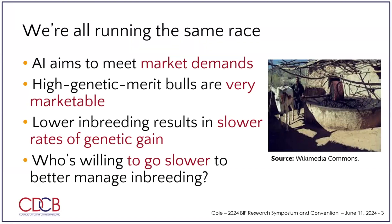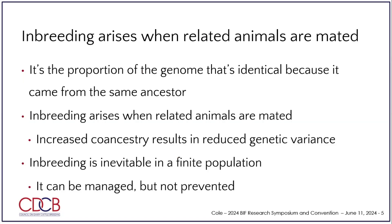Inbreeding is different things to different people. I'm not going to show a bunch of equations or talk about pedigree inbreeding versus genomic inbreeding versus runs of homozygosity, because for the points I want to make, the technical differences don't matter. We just need to remember we're talking about the proportion of the genome that two animals share in common — they share DNA because they have shared ancestry somewhere back in time. Inbreeding happens when you mate related animals, which we cannot avoid in a finite population.